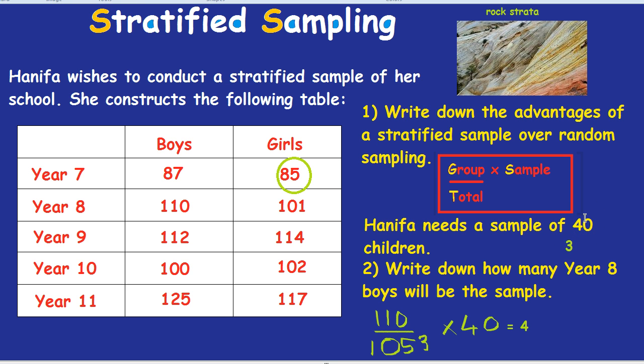We can see from this some of the advantages of a stratified sample. Each group — be it year 7 boys all the way through to year 11 girls — will have their own say in this sample, all thanks to that formula.